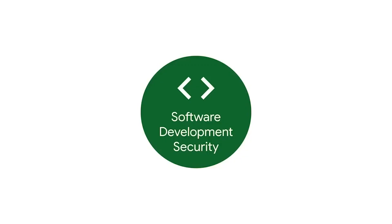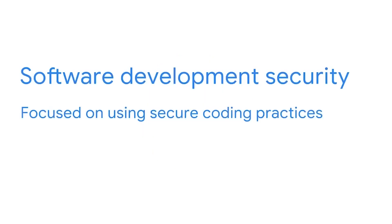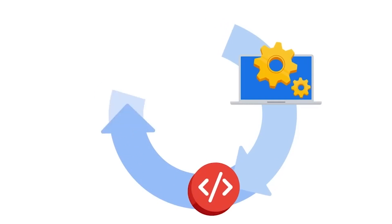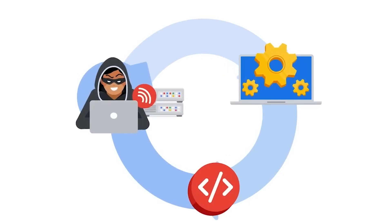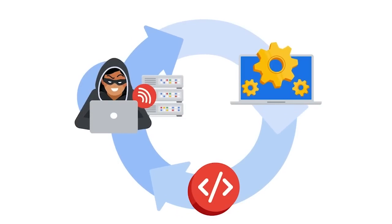The eighth and final security domain is software development security. This domain focuses on using secure coding practices, which are recommended guidelines used to create secure applications and services. The software development lifecycle is an efficient process used by teams to quickly build software products and features, and security is an additional step in this process. By ensuring that each phase of the software development lifecycle undergoes security reviews, security can be fully integrated into the software product. For example, performing a secure design review during the design phase, secure code reviews during the development and testing phases, and penetration testing during the deployment and implementation phase ensures that security is embedded at every step.